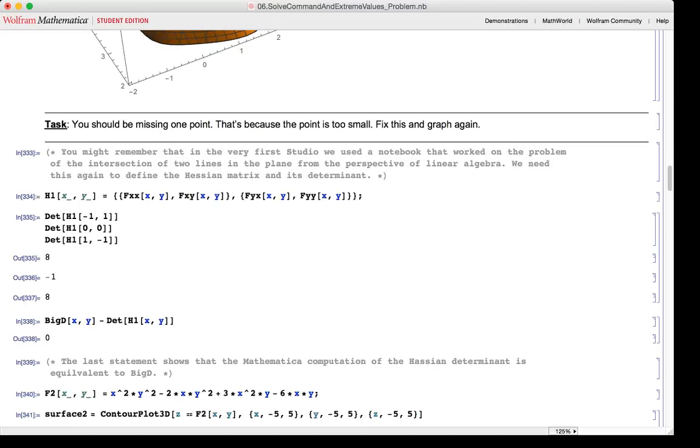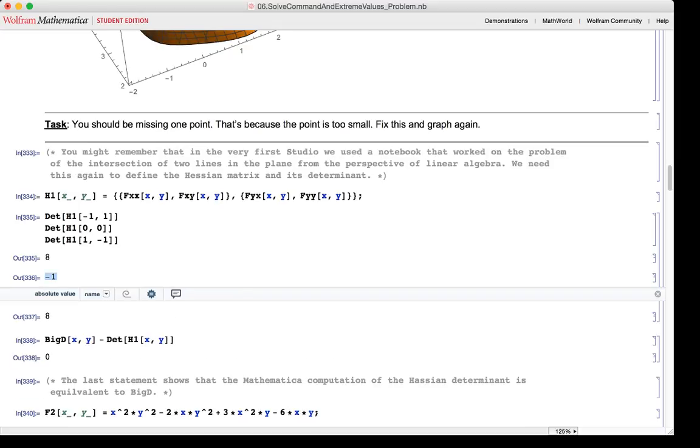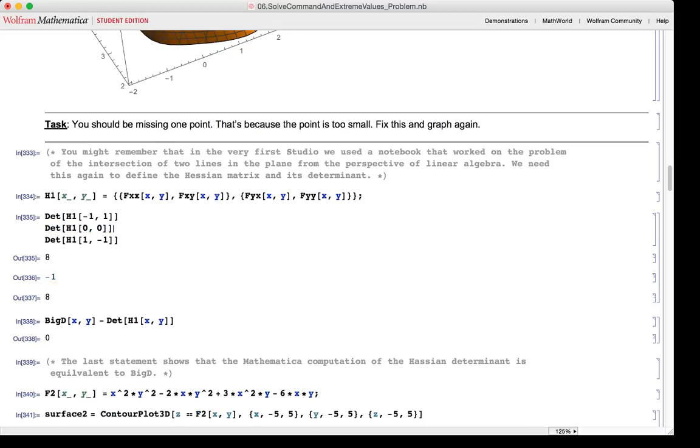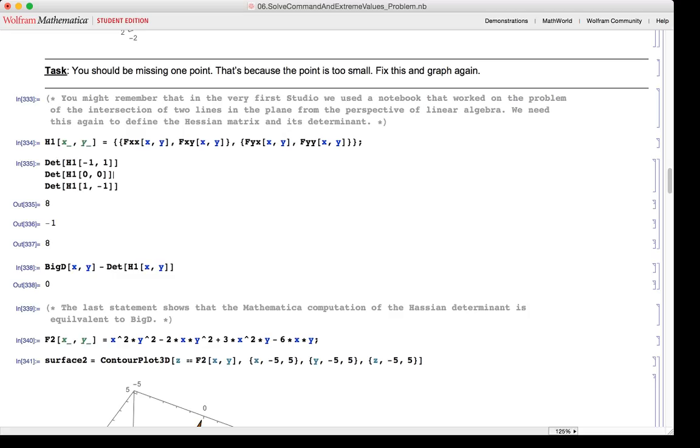The determinants of the Hessian, given the ordered pairs minus 1, 1, 0, 0, and 1, minus 1, are thus shown. So if the determinant of the Hessian is greater than 0, you have a min or max. If the determinant of the Hessian is less than 0, you'll have a saddle. Big D, the determinant of the Hessian, is subtracted from big D. And as you can see, that quantity equals 0, so therefore big D is the same as the determinant of the Hessian.